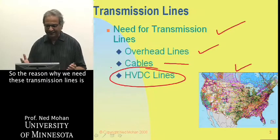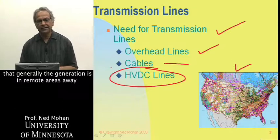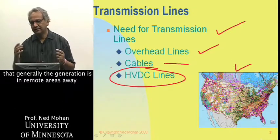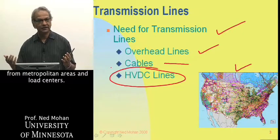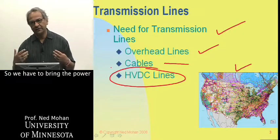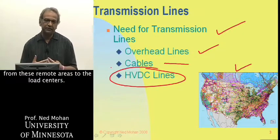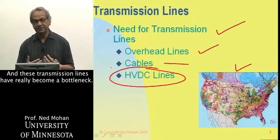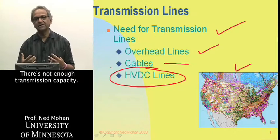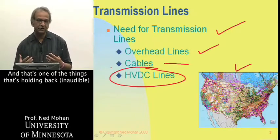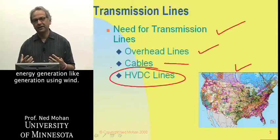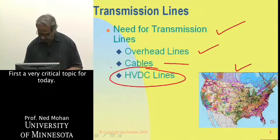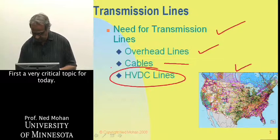The reason why we need these transmission lines is that, generally, generation is in remote areas away from metropolitan areas and load centers. So we have to bring the power from these remote areas to the load centers. These transmission lines have really become a bottleneck — there's not enough transmission capacity, and that's one of the things holding back renewable energy generation, like wind generation. So that's a very critical topic for today.